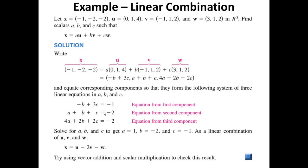If you do get real number scalars — like a equals 1, b equals -2, c equals -1 — then we can say that X can be written as a linear combination of U, V, and omega. But if the system is inconsistent, then we conclude that X cannot be written as a linear combination of U, V, and omega. We shall see many more problems in class. Thank you very much.